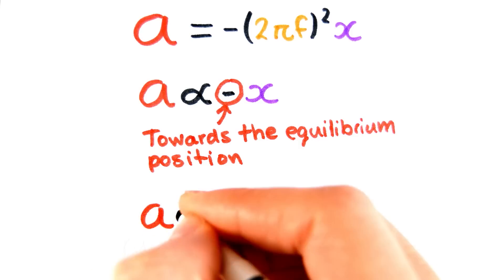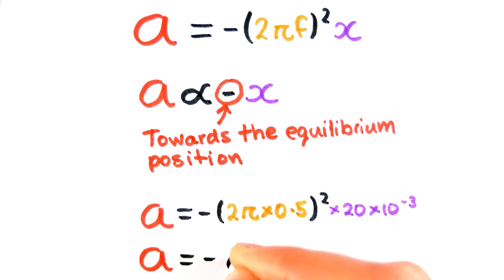Hence, we can work out the acceleration at 20 mm to be minus 0.197 meters per second squared.